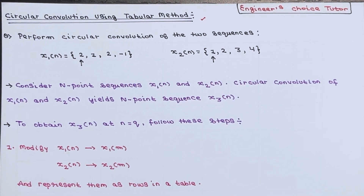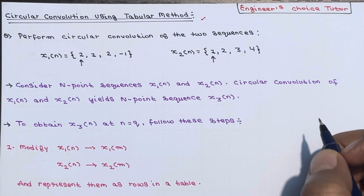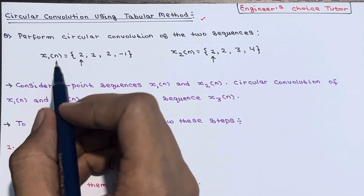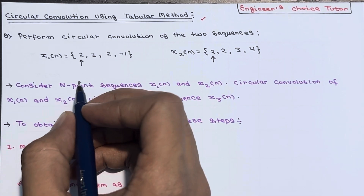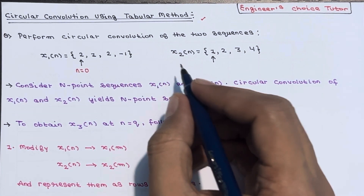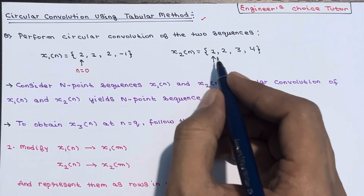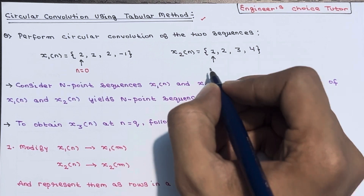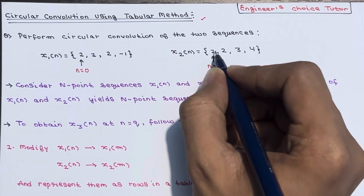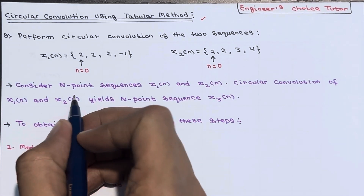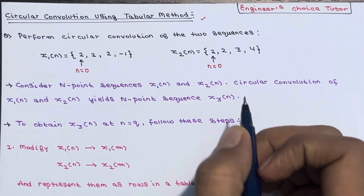In this lecture we will talk about circular convolution using the tabular method. We need to perform circular convolution of two sequences. The first sequence x1(n) is given as {2, 1, 2, -1} where the arrow represents the n=0 term. The second sequence x2(n) is given as {1, 2, 3, 4}, where the arrow term represents the value at n=0.